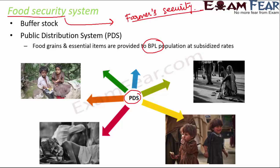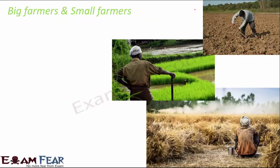Farmers gradually get segregated into two classes: big farmers who are rich, and small farmers who are poor. Facilities like free power are made available to only a section of farmers. Those who get free power use it to pump groundwater.